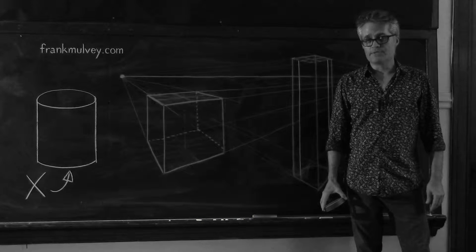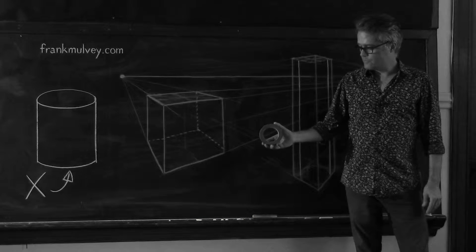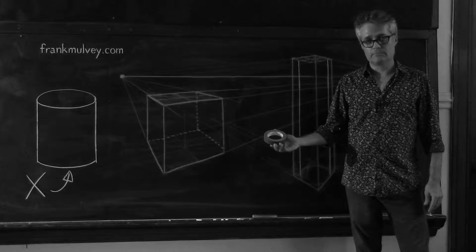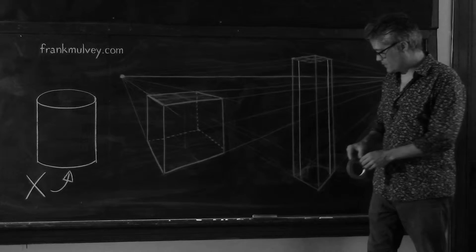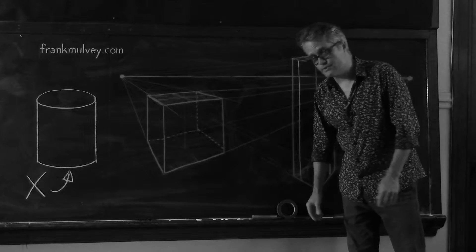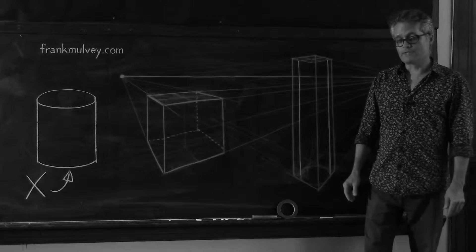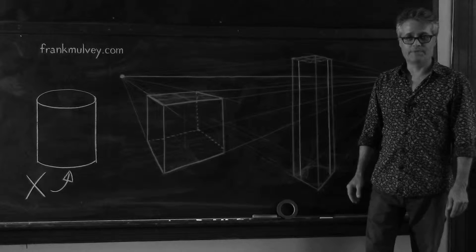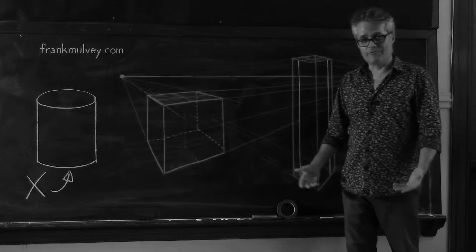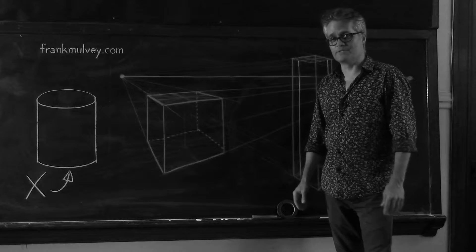An ellipse is the shape that we see when we look at a circle from a particular angle. And circles are the cross sections of cylinders. So when we have to draw a cylinder seen from a particular perspective, we have to face up to the challenge of drawing ellipses that look healthy.